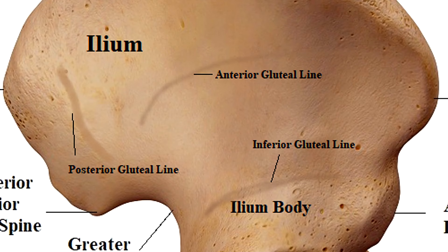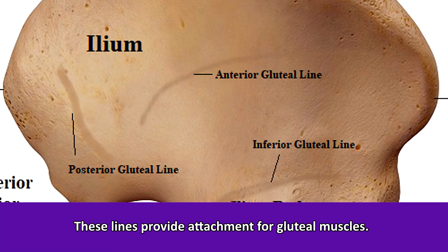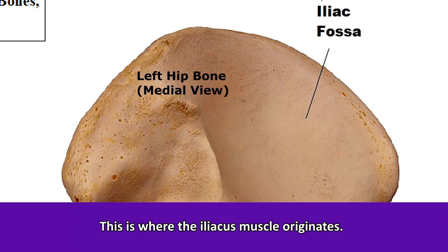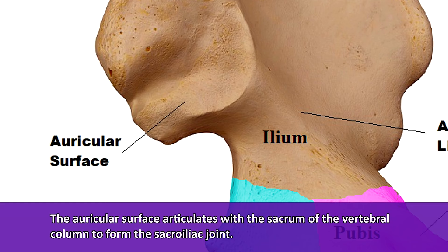When looking at the ilium from the lateral or side view, you can see three distinct lines named after their relative directional terms: a posterior, an anterior, and an inferior gluteal line. These lines provide attachment for the gluteal muscles. When you look at the medial or inner view of the pelvic bone, you'll notice a large depression at the anterior region called the iliac fossa.